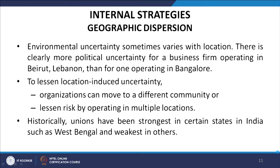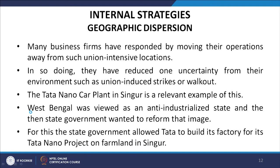Another internal strategy is geographic dispersion. Environmental uncertainty sometimes varies with location — there is clearly more political uncertainty for a business operating in Beirut, Lebanon than in Bangalore. To lessen location-induced uncertainty, organizations can move to a different community or lessen risk by operating in multiple locations. Historically, unions have been strong in certain states in India such as West Bengal, and many business firms have responded by moving operations away from such union-intensive locations.